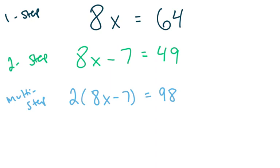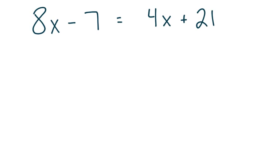Now today we're going to look at equations where there are variables on both sides. Equations look like this. There's more than one x — there's an x on this side of the equal sign, and there's an x on this side of the equal sign. At first this might look a little confusing, but there's been the same process every time — we've just been building on it. This is just one more added step.